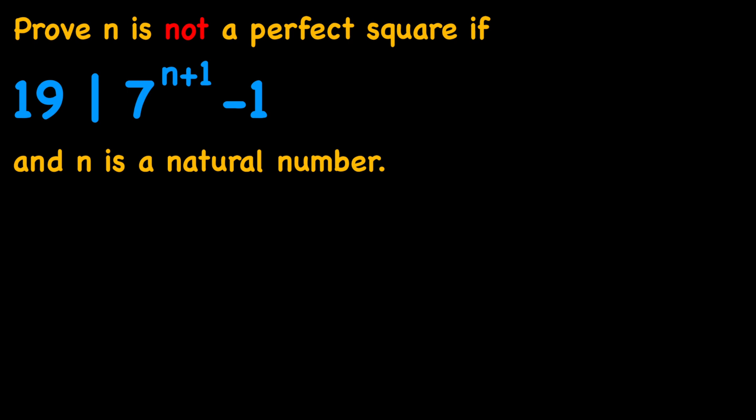I'm going to use proof by contradiction, meaning that I'm going to assume that n is a perfect square, and then use that assumption to get to a contradiction. Based on that contradiction, I can say that n cannot be a perfect square.